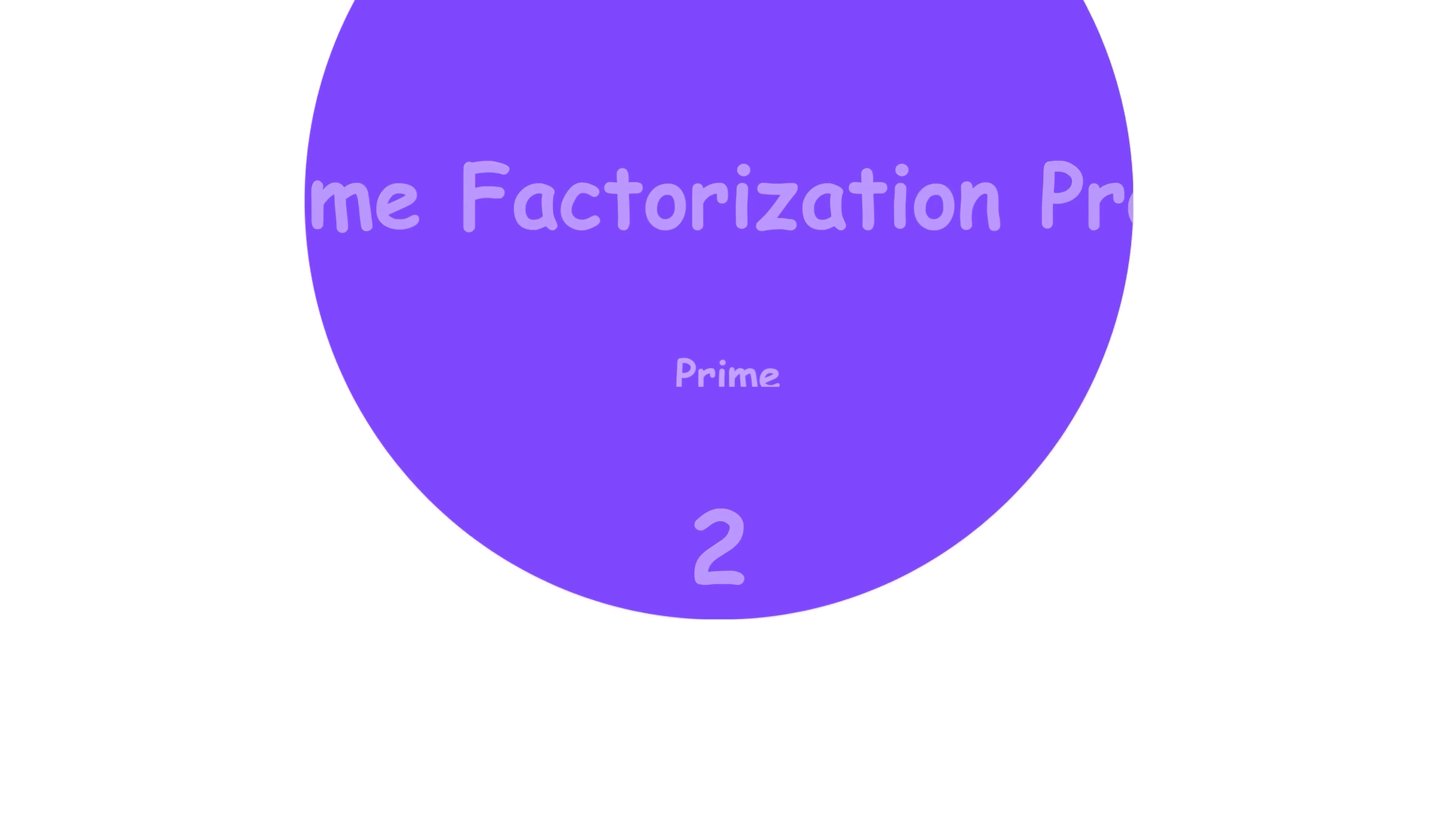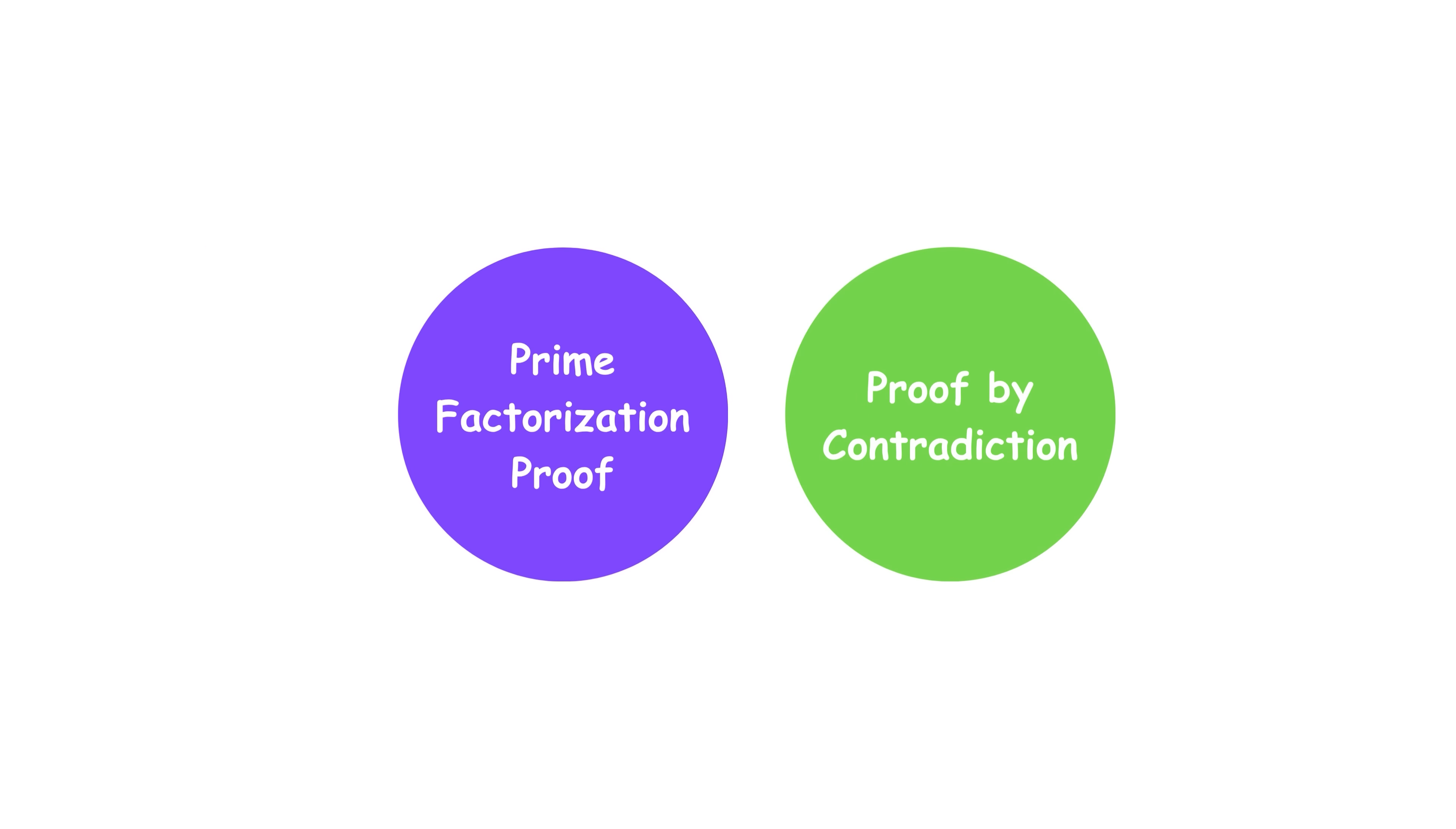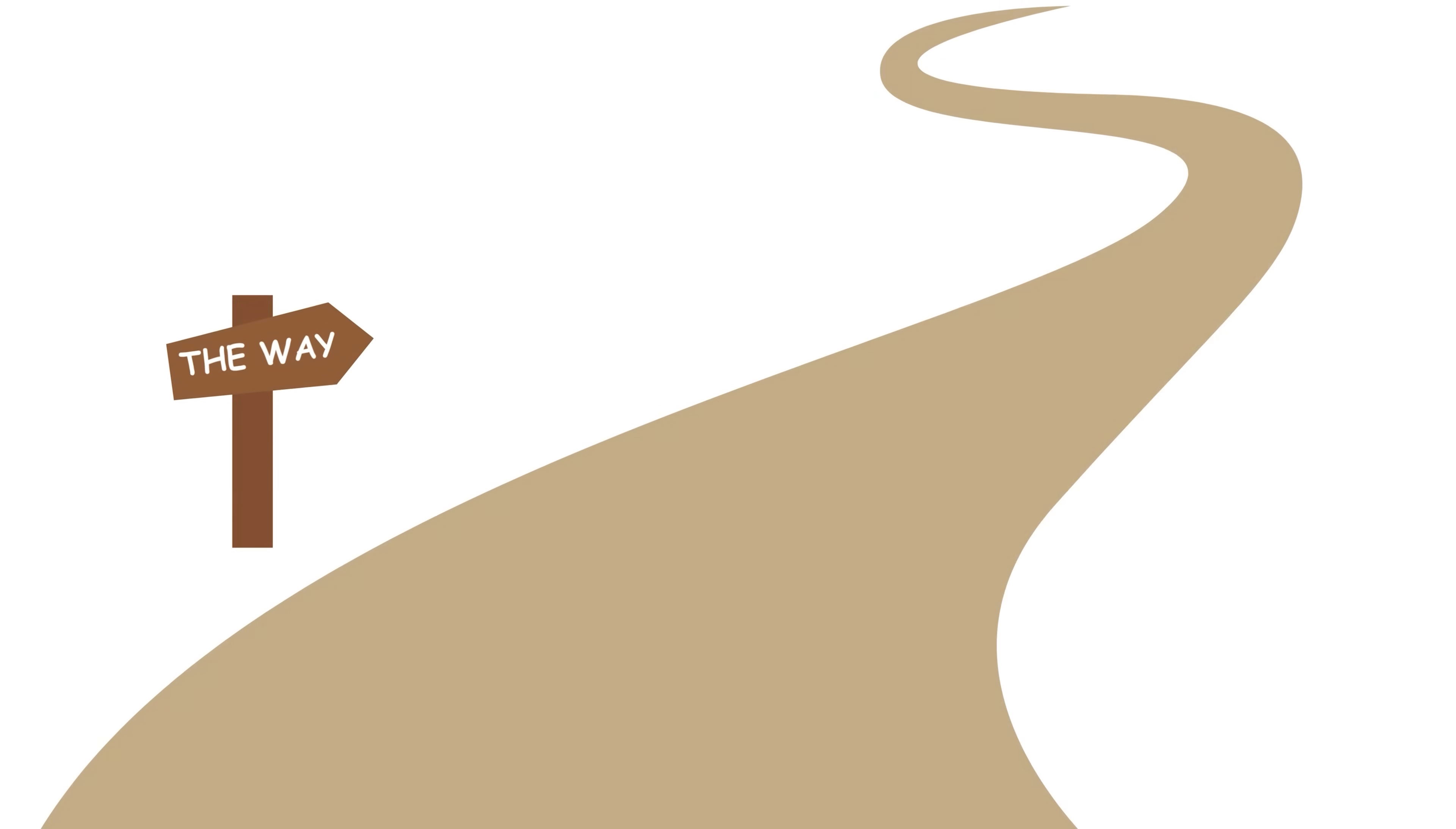2: Prime factorization proof. This approach is closely related to the classic proof by contradiction, but emphasizes the properties of prime factors explicitly. It begins the same way as the first proof. Again, we find a squared equals 2b squared, using the same sequence of steps as before. We've already walked through those steps once, so we'll skip past them this time.